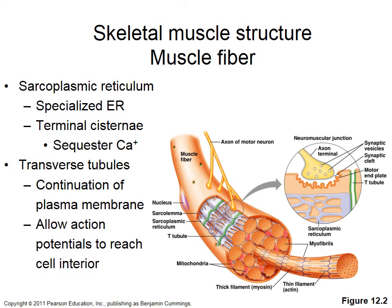The endoplasmic reticulum in muscle fibers is called the sarcoplasmic reticulum. It is shown in light purple. The sarcoplasmic reticulum is a specialized form of endoplasmic reticulum, and its main function is to serve as an intracellular storage site for calcium. Normally calcium is in high abundance outside cells, but skeletal muscles differ in having intracellular stores of calcium.